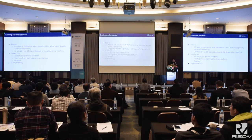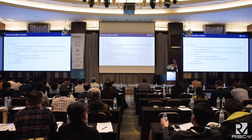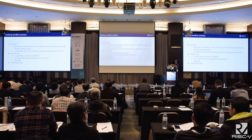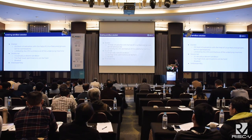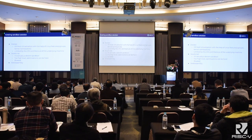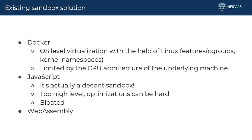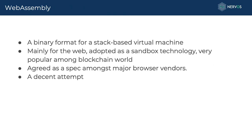JavaScript is a very flexible sandbox environment — you can run it on pretty much any CPU architecture. But the problem is that it's too high-level. Applying certain optimizations, like vector optimization for cryptographic algorithms, is very hard. JavaScript is also quite bloated. Luckily, there's a recent effort combining Docker and JavaScript, which is WebAssembly. WebAssembly is a binary format, similar to RISC-V but at a higher level, designed for a stack-based virtual machine mainly intended for the web, but recently seeing a lot of adoption in the blockchain space.